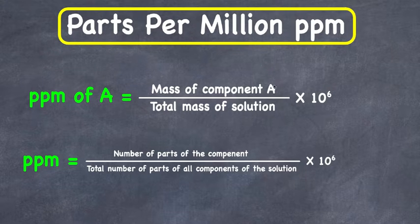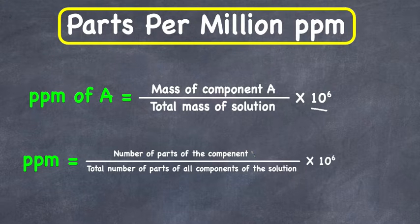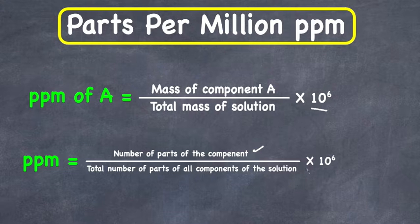...equal to the mass of the component A divided by the total mass of the solution, multiplied by 10 raised to power 6. It can also be written as the number of parts of the component divided by the total number of parts of all components of the solution, multiplied by 10 raised to power 6.